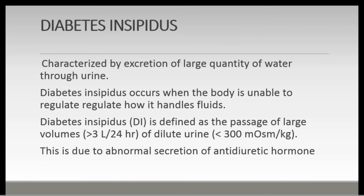One dysfunction of the hypothalamus is diabetes insipidus, which is due to abnormal secretion of the antidiuretic hormone. It is characterized by excretion of large quantities of water through the urine. Diabetes insipidus occurs when the body is unable to regulate how it handles fluids and is not related to diabetes mellitus at all. It is defined as the passage of large volumes of dilute urine — more than three liters per day.